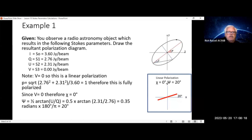Your P, which is the square root of your QUV squared over I, equals 1. So this is fully polarized. Since V equals 0, chi is also equal to 0.